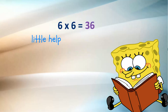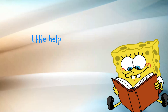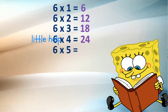6 sixes are 36. 6 sixes are 36. 6 sixes are 36. 6 ones are 6, 6 twos are 12, 6 threes are 18, 6 fours are 24, 6 fives are 30, 6 sixes are 36.